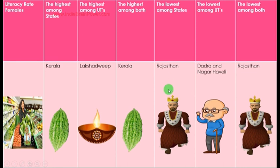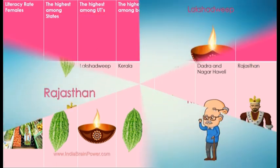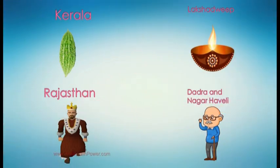The lowest literacy rate among states is Rajasthan. The lowest among UTs is Dadra and Nagar Haveli. The lowest overall is Rajasthan. Now let's look at the pictures for the codes of Kerala, Lakshdweep, Rajasthan, and Dadra and Nagar Haveli — the base image for total literacy rate among females.